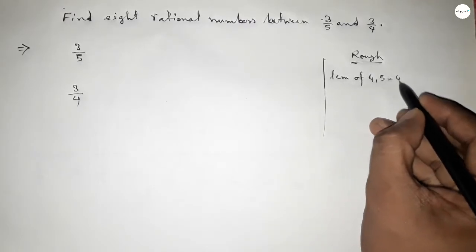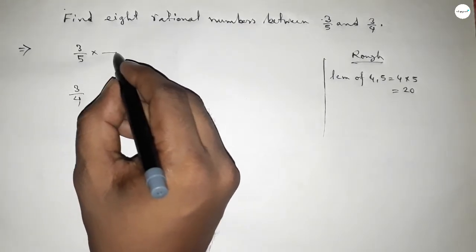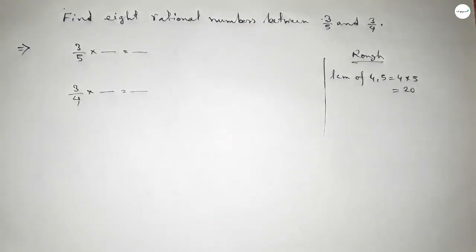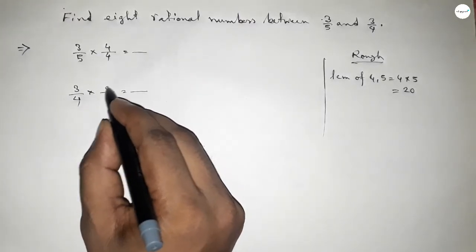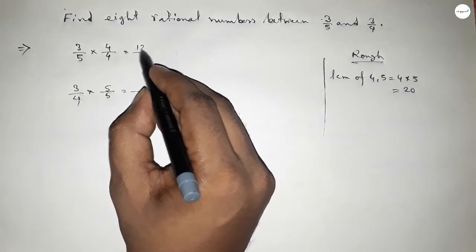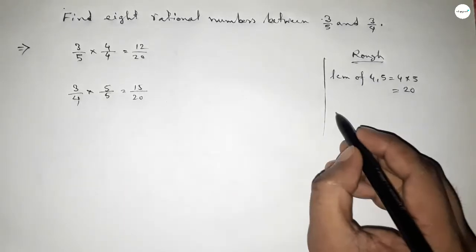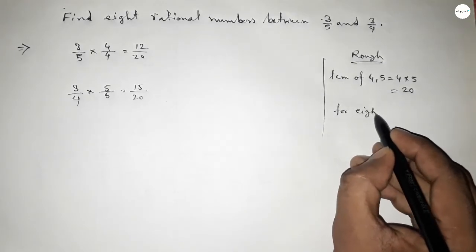Their product is the LCM, so 20. Now what should be multiplying here to get denominator same? If you put here 4 and here 5, then we can get the denominator of both 20. So this is 12 over 20 and this is 15 over 20.